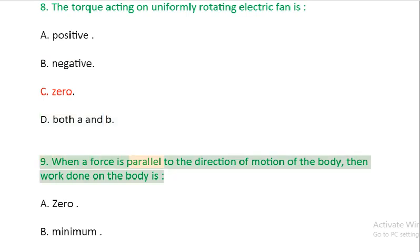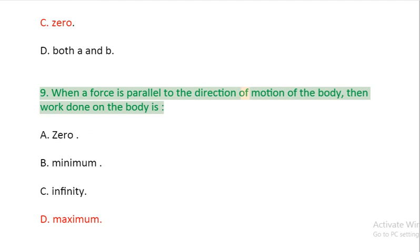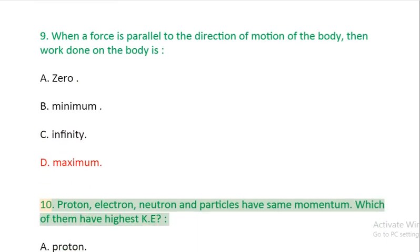Question 9: When a force is parallel to the direction of motion of the body, then work done on the body is: A: zero. B: minimum. C: infinity. D: maximum.